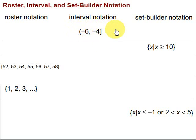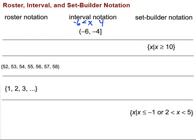Let me jot it down in terms of an inequality. We've got negative six on one side and four on the other. The negative six is not included because it has a parenthesis, so that would be less than. And negative four is included, so that would be less than or equal to. My suggestion for writing interval notation is to find what's on either end of your section of the number line, then use whether they're included or excluded to determine if you put a parenthesis or a bracket.